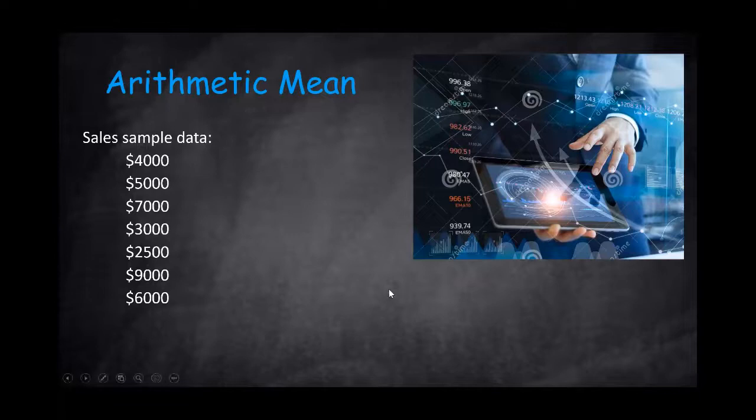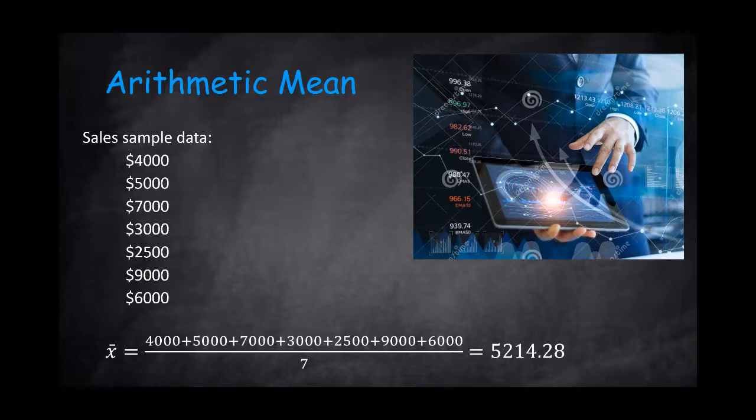For example, if we have sales that have been collected, let's say for different sales reps, if you want to calculate the arithmetic mean, we will add all the sales and divide it by the number of observations. So in this case, we're getting an average sale.